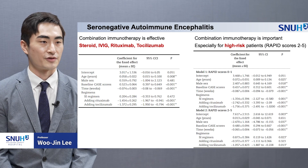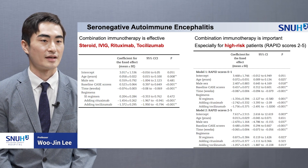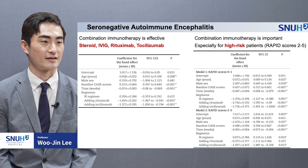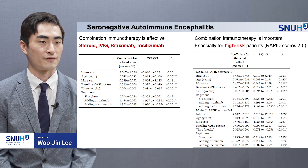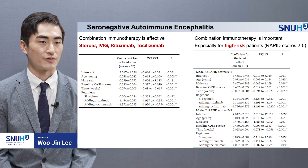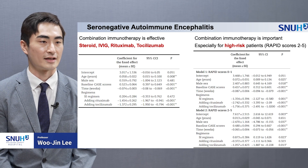IVIG was used in 96%, high-dose steroid and rituximab in 80%, and tocilizumab in 40%. In a linear mixed model to evaluate the efficacy of immunotherapy, adding rituximab and tocilizumab were both effective in improving the clinical severity.